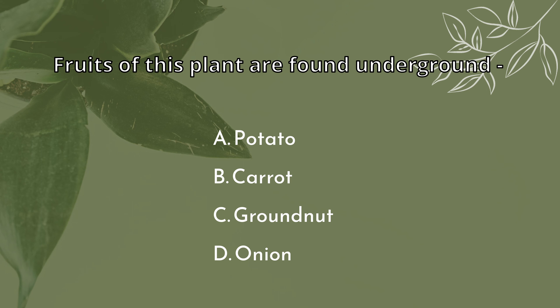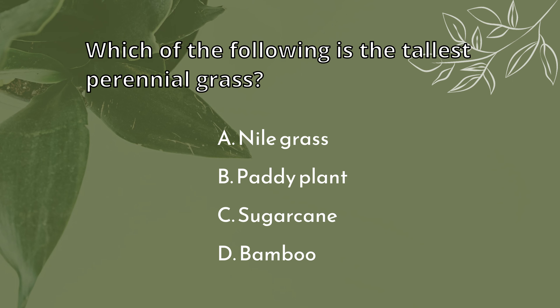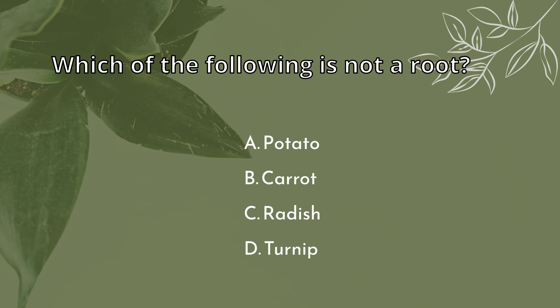Fruits of this plant are found underground. Groundnut. Which of the following is the tallest perennial grass? Bamboo. Which of the following is not a root? Potato.